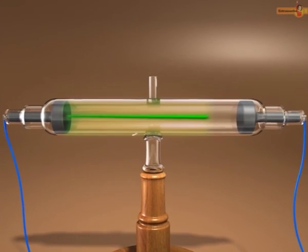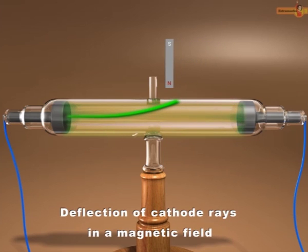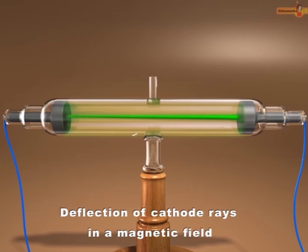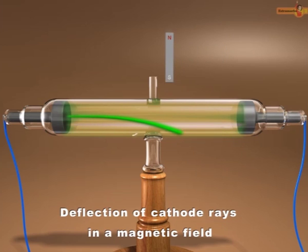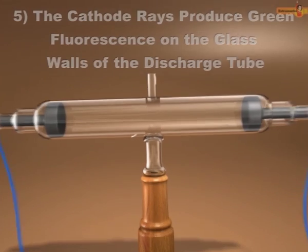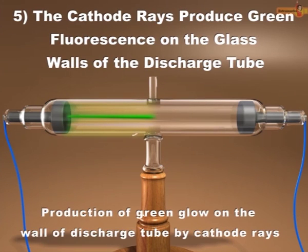Similarly, when a magnetic field is applied, the cathode rays are deflected towards the magnet. On reversing the position of the magnet, the rays will be deflected in the opposite direction, showing that the cathode rays carry negative charge. The cathode rays produce green fluorescence on the glass walls of the discharge tube.